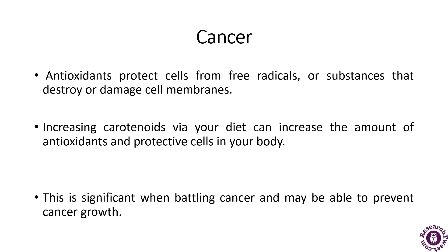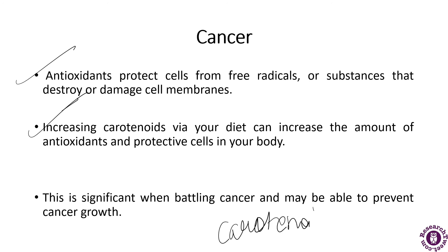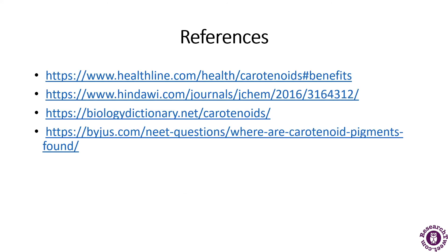For cancer, antioxidants protect cells from free radicals — substances that destroy or damage cell membranes. Increasing carotenoids in your diet can increase the amount of antioxidants and protective cells in your body, which may help prevent cancer growth. Carotenoids have been associated with a lowered risk of cancer, especially lung cancer. One study showed a small decrease in the risk of lung cancer when incorporating carotenoids in the diet. It is even healthier to stop smoking and increase carotenoids in your diet to help your lungs heal.